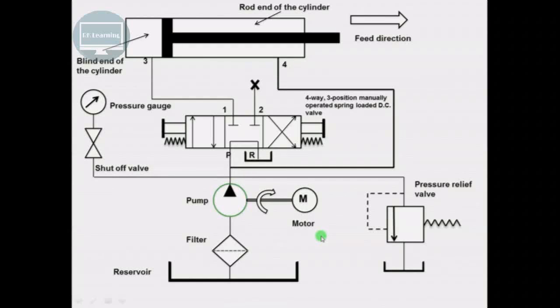This figure shows a regenerative hydraulic circuit which is used to speed up the outstroke speed of the piston of a double-acting cylinder. This is the outstroke of the circuit.